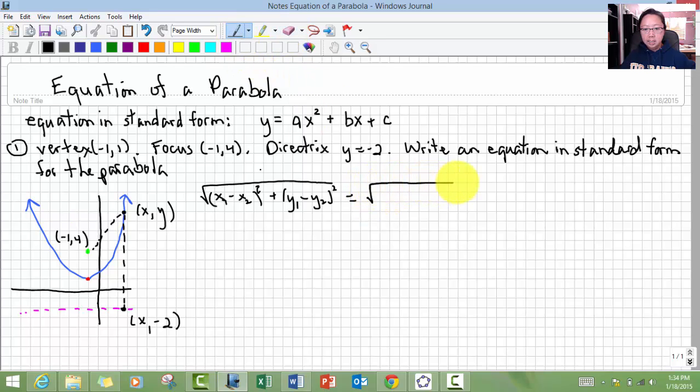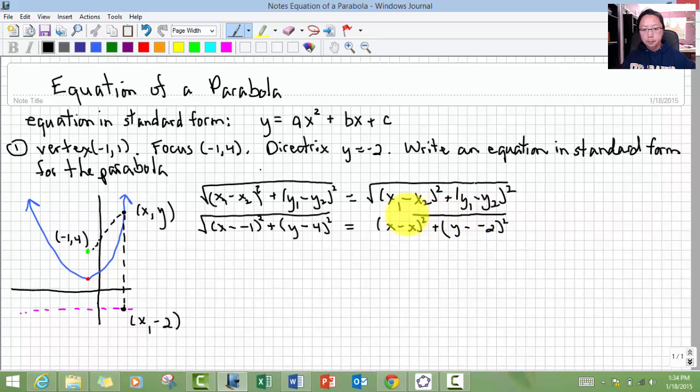Those two line segments will equal each other. So let's do this one here. x minus the focus is negative 1, so I have double negatives. I will need to take care of that later. y minus 4. There you go. Next, I'm going to do this line segment here. x minus x. And it's going to be y minus negative 2.